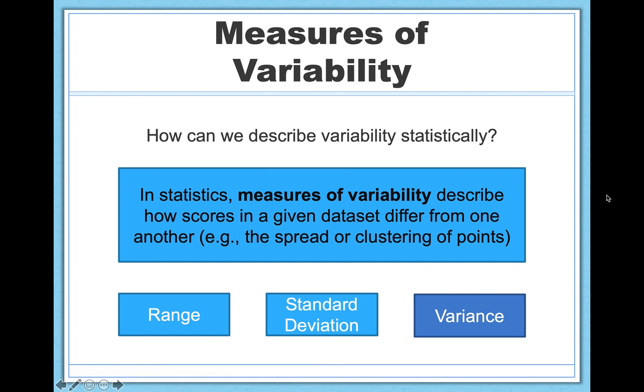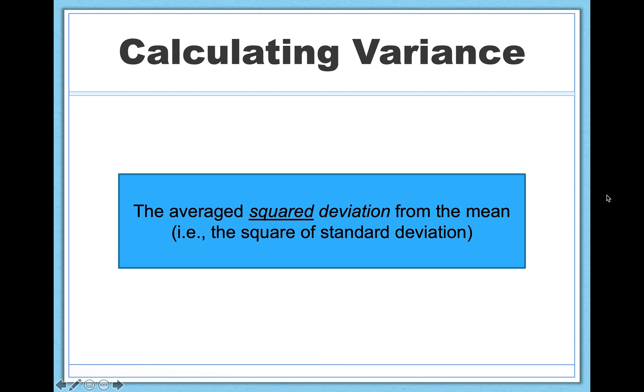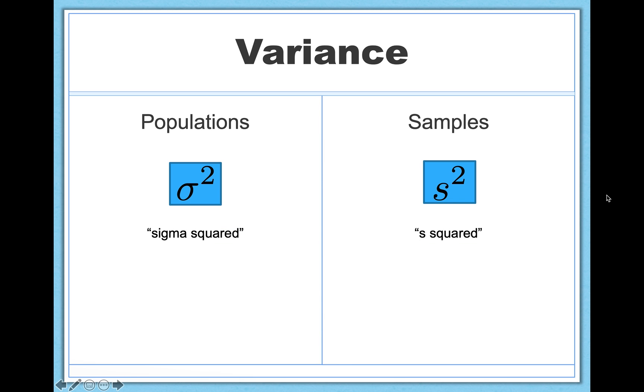So finally, we have variance. Variance is very simple. It's just the square of standard deviation. So it's the average squared deviation from the mean. Unfortunately for variance, it doesn't get its own symbols. We just take the symbols we already have for standard deviation, and we put a squared because it's just squared standard deviation. So here for a population, we would call the variance in a population sigma squared. And for a sample, we would call the sample variance s squared.